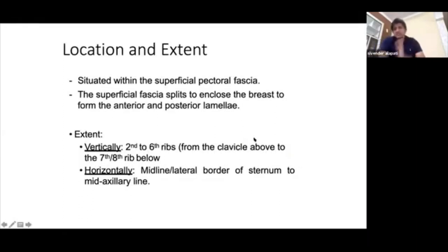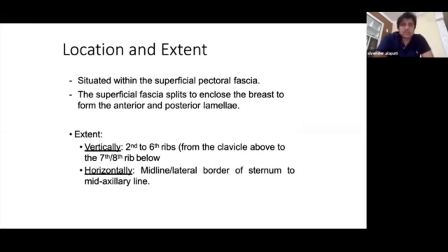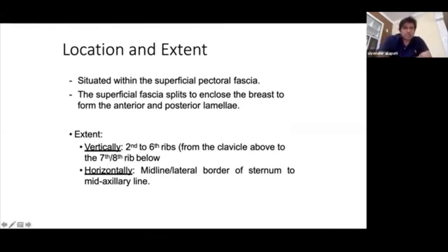The breast is present in the superficial pectoral fascia, and the superficial fascia splits to enclose the breast. The pectoral fascia splits open and becomes an anterior and posterior lamella, enclosing the breast tissue. Vertically, it extends from the second rib to the sixth rib. Horizontally, it extends from the midline or lateral border of the sternum to the mid-axillary line.